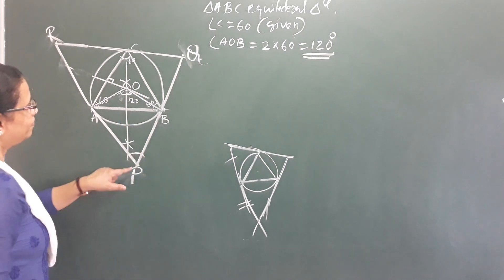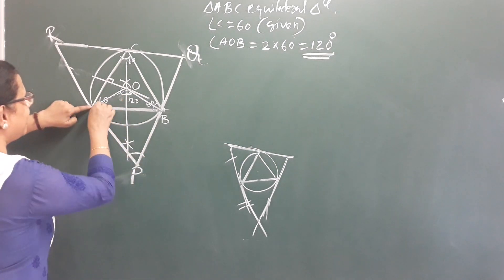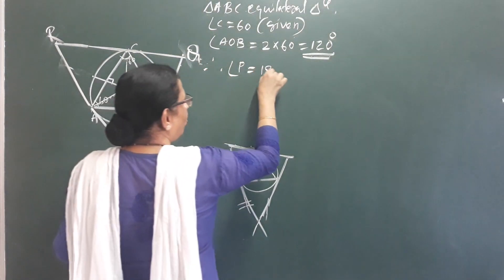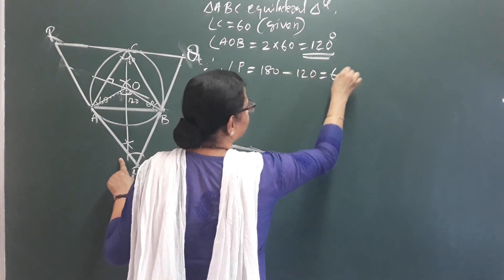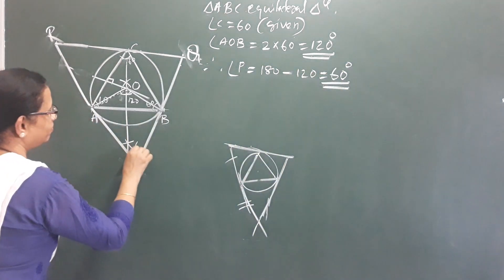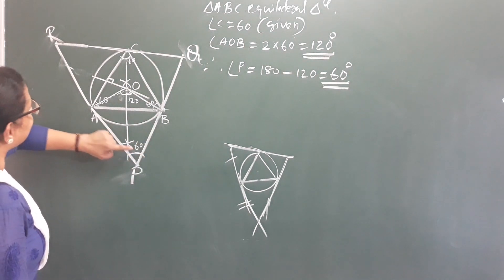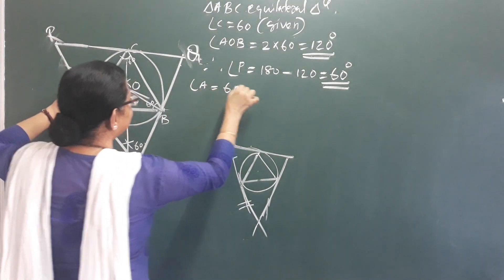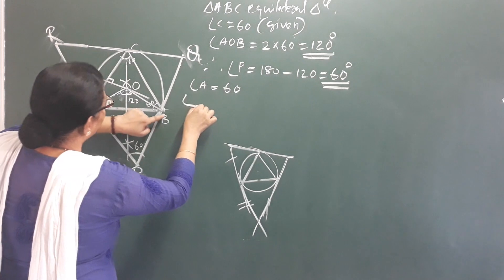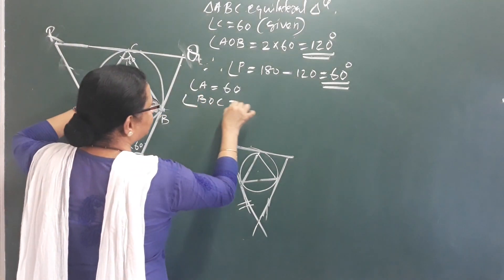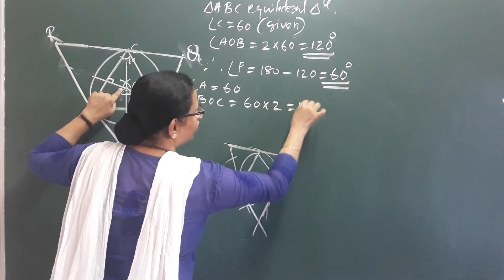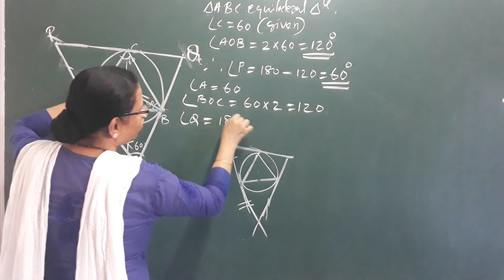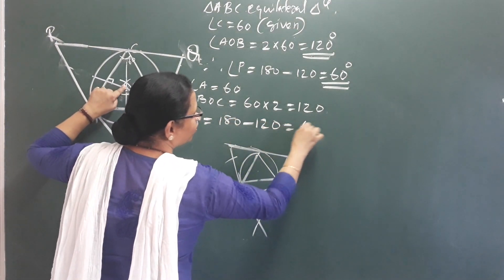We have studied the property. This is 90, this is 90, this is angle P. Therefore, angle P is equal to 180 minus 120, that is equal to 60 degrees. We have 60 degrees. Similarly, this angle is 60 degrees. The angle A is equal to 60 degrees. B, O, C is equal to 60 into 2, that is equal to 120 degrees. Angle Q is equal to 180 minus 120, that is equal to 60 degrees.